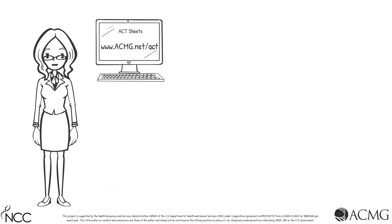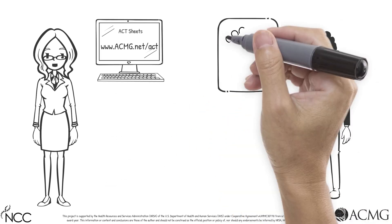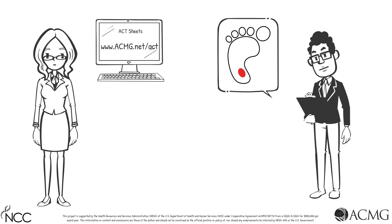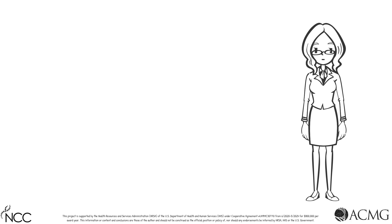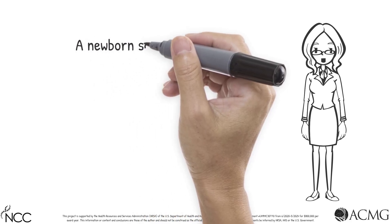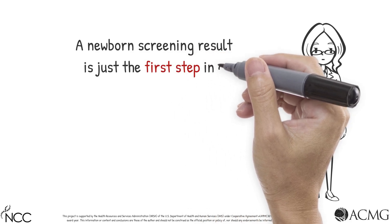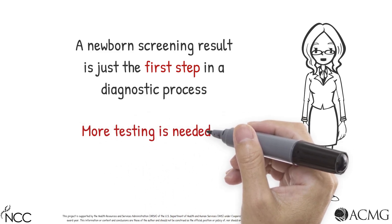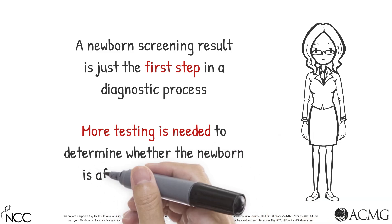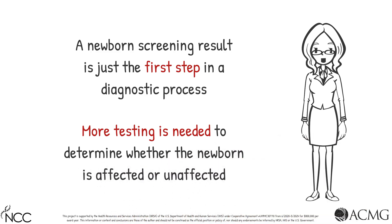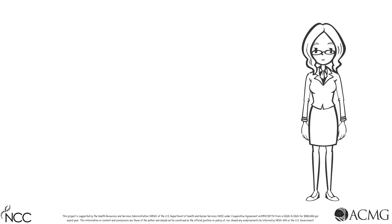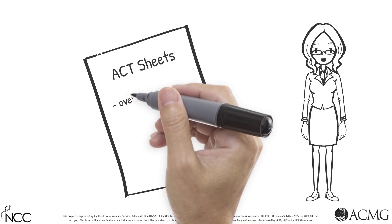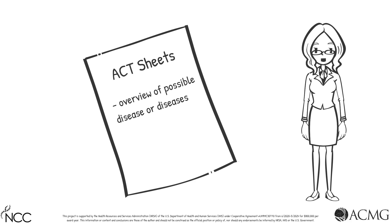ACT Sheets are intended to be immediate resources for providers who encounter positive newborn screening results. Please keep in mind that a newborn screening result is just the first step in the diagnostic process. Further testing and evaluations are needed to determine if the newborn has the disease — a true positive result — or is unaffected — a false positive result. The ACT Sheets are intended to provide an overview of the diseases identified by newborn screening and clear next steps for management of a positive newborn screening result.